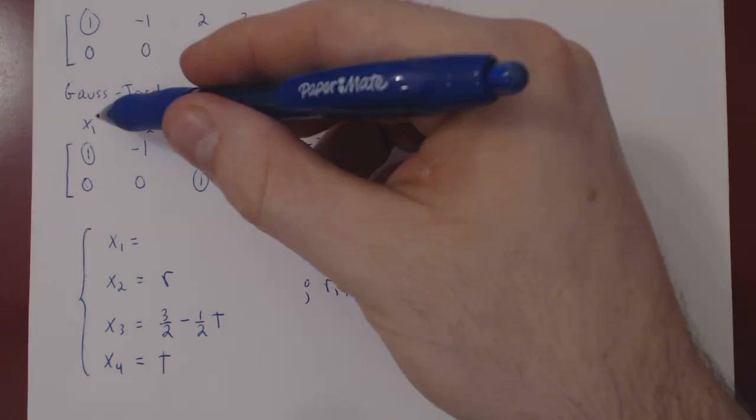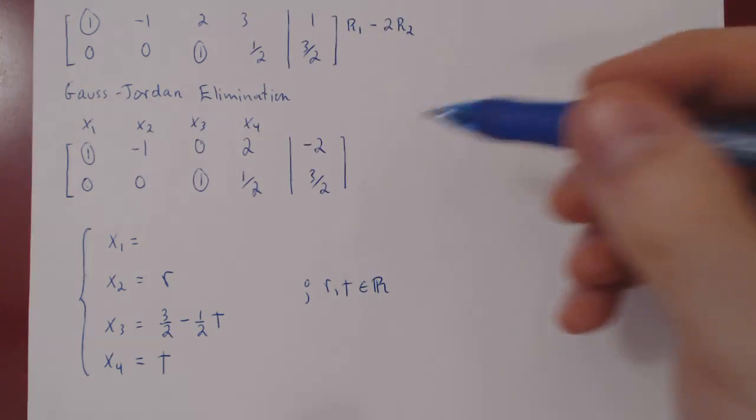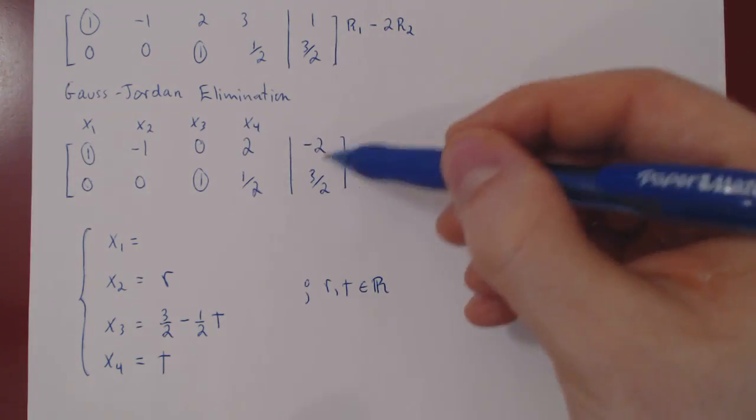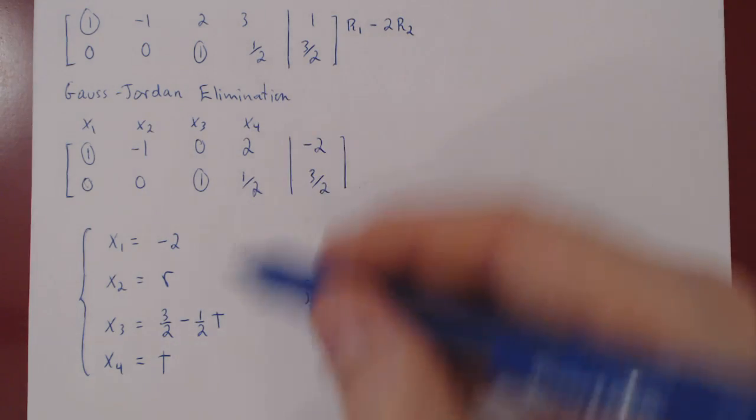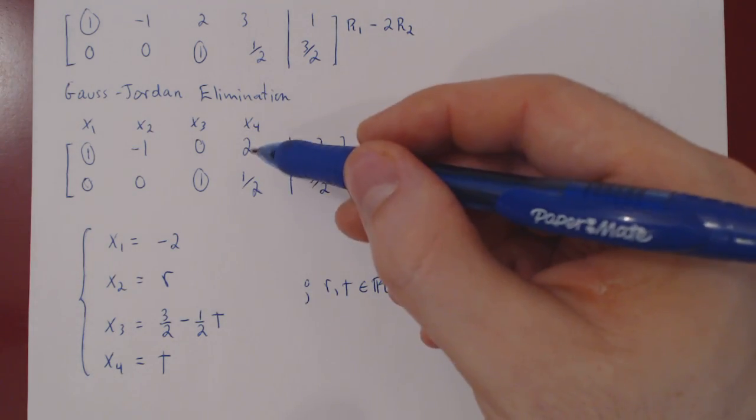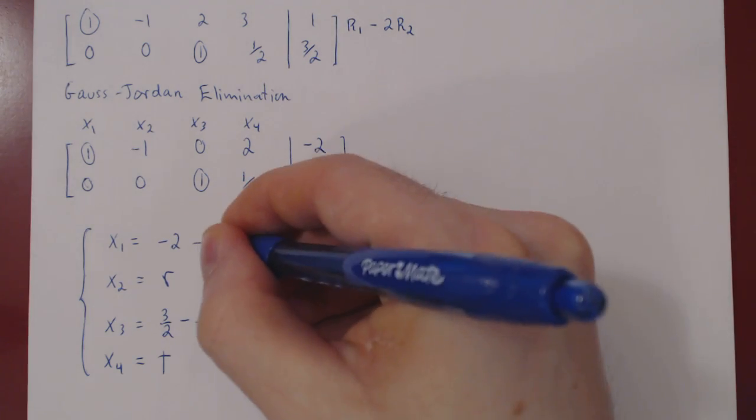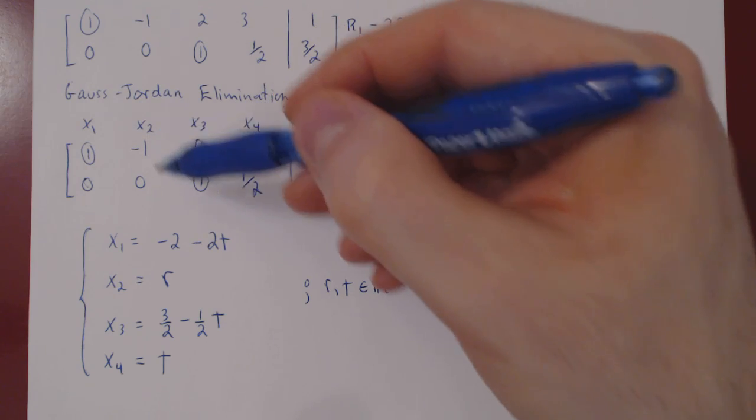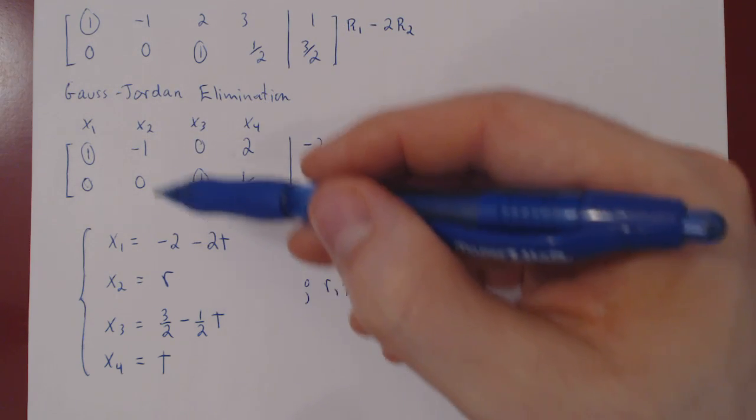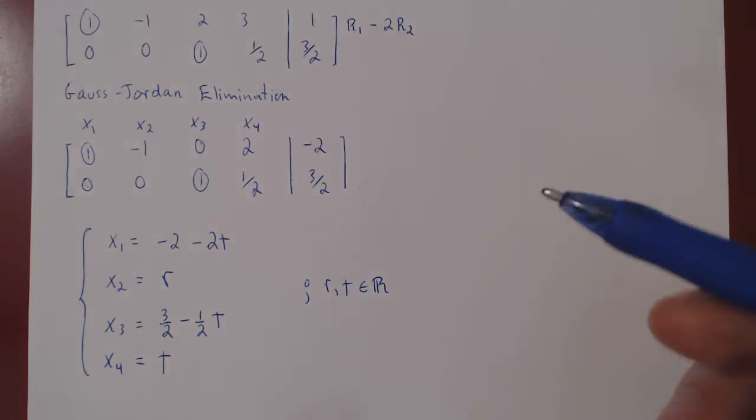We can now solve for x1 using its corresponding leading one. So x1 equals negative 2. There's a 2x4, which is a 2t, on the left. On the right, it becomes a negative 2t. And there's also a negative x2, which is a negative r. On the right, it becomes a positive r.